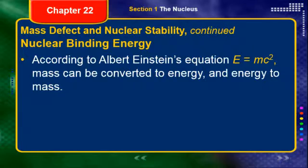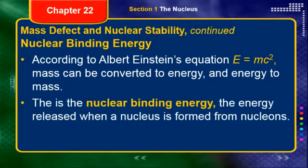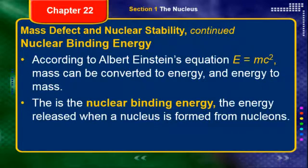Moving on to the nuclear binding energy: the nuclear binding energy is the energy that is released when a nucleus is formed from nucleons. All the protons and neutrons that come together to form a nucleus — when they do combine, there is a small bit of mass that is lost. But according to E equals MC squared, that represents a certain amount of energy that is released. The mass that is lost doesn't just disappear or vanish — it's actually converted into energy and then released. That is the nuclear binding energy.